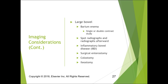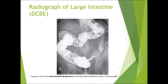For the large bowel, we can do single or double contrast. Double contrast means putting air and barium within the colon. We do spot radiographs during and after the study. We're looking for inflammatory bowel disease, surgical changes, and ostomies. On this air contrast enema, you can see the ascending colon, transverse colon, descending colon, and the tip in the rectum.